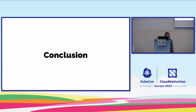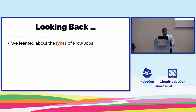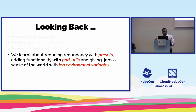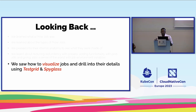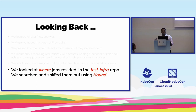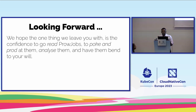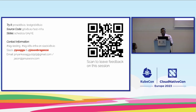In conclusion: we learned what a Prow job was and the types of Prow jobs. We peeked into their anatomy, learned about reducing redundancy with presets, added functionality with pod-utils, and gave jobs environment variables. We saw how to visualize jobs with TestGrid and Spyglass, looked at where job configs live in the test-infra repo, used Hound to search, and walked through real-world examples. We hope you leave with the confidence to read Prow jobs and try them. You can explore at prow.k8s.io, the source is at git.k8s.io, and the speakers are on Slack as P. Sagu and Jason Baganza.